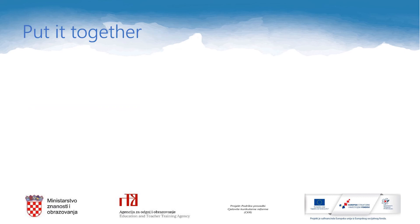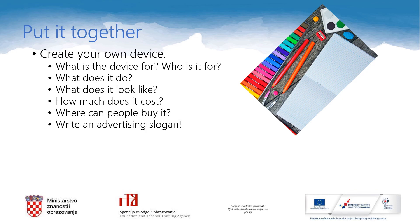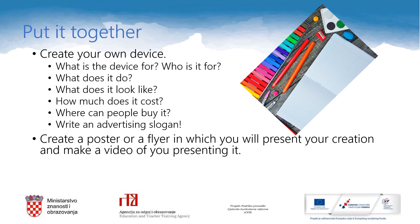And now it's time to put it all together for your final task. I hope that you have come up with an idea for a device that can help you with some everyday activities. Use your creativity to make a poster or a flyer in which you will present this device, and while doing it answer these questions: What is the device for and who is it for? What does it do? What does it look like? How much does it cost? Where can people buy it? And finally, think about an advertising slogan. When you're finished creating a poster or a flyer, you will make a video of yourself presenting it and send the video to your teacher.